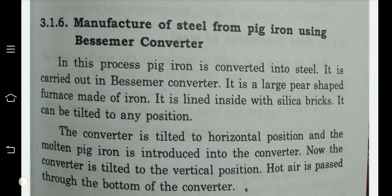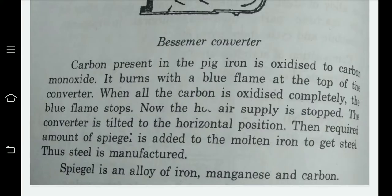The carbon present in the pig iron is oxidized to carbon monoxide, which burns with a blue flame at the top of the converter. When all the carbon is completely oxidized, the blue flame stops. The hot air supply is then stopped and the converter is tilted back to the horizontal position.